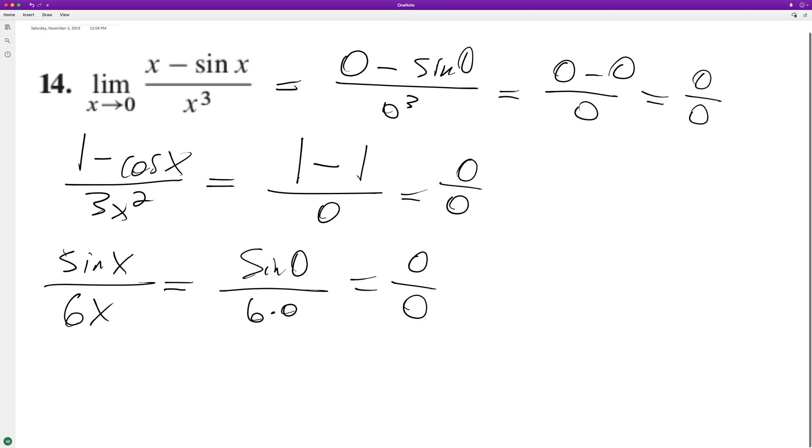So we end up with cosine of x over 6. Plug in 0. Cosine of 0 is 1 over 6, and that's it. It's a little bit long-winded, but we finally got the answer. I hope this helped you out. Thanks for watching, and have yourself a great day.